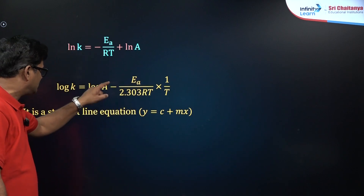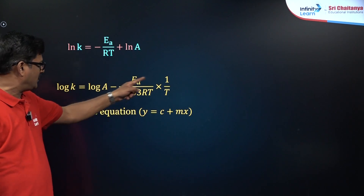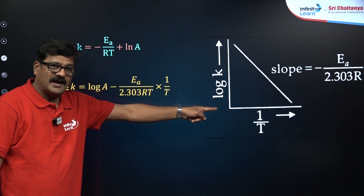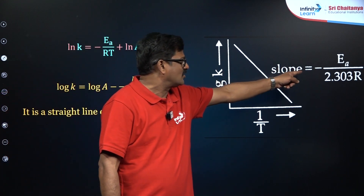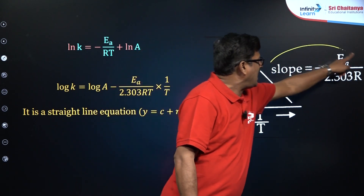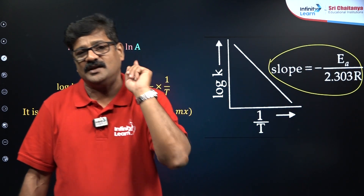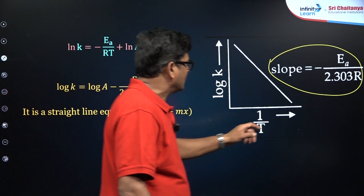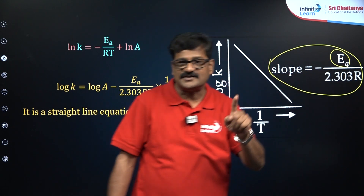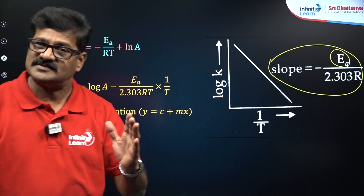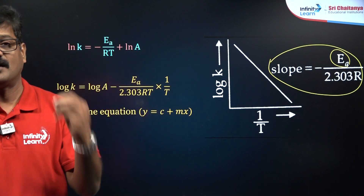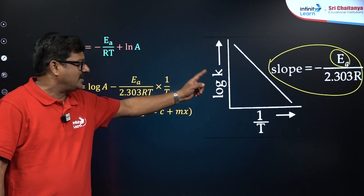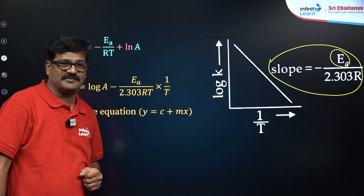This equation is of the form y = mx + c, giving a straight line with a negative slope. The slope of the log k versus 1/T plot equals −Ea/(2.303R). This is a very important expression for the NEET examination — the slope will be given and you are asked to calculate the activation energy. This is a key catch point. A separate class on important graphs in chemical kinetics will cover this major graph in detail.